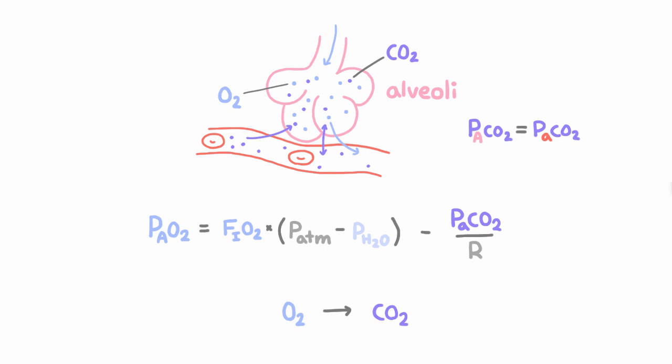Okay, so arterial CO2 gives us a sense of how much O2 is used up. But then what is this R? Well, let me ask you a question.